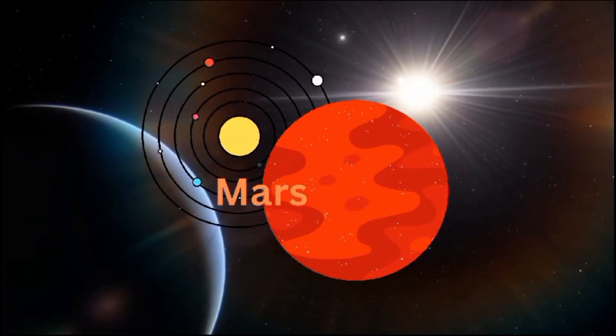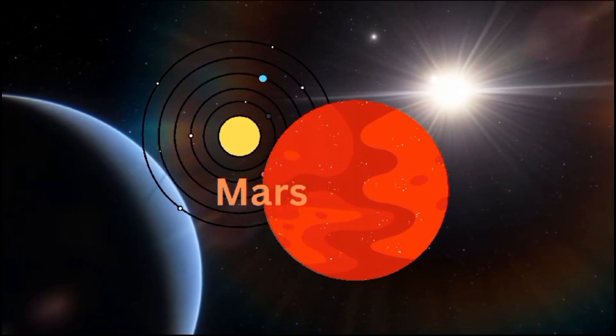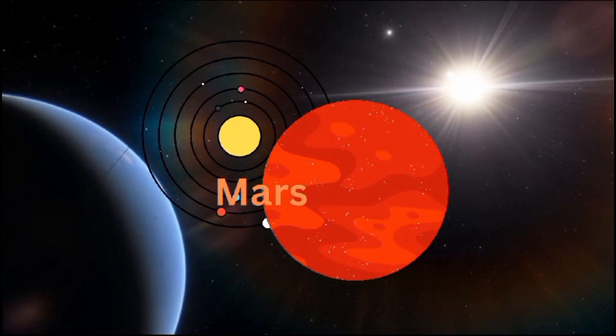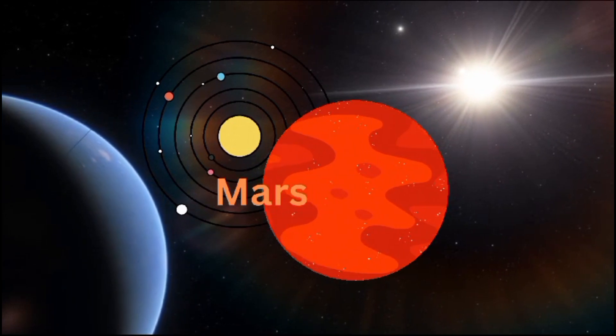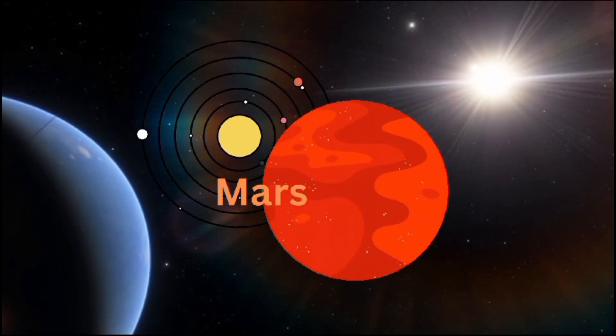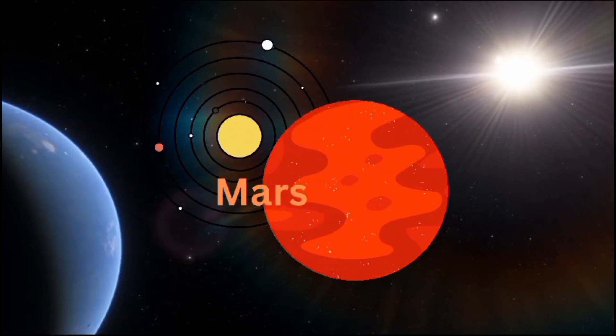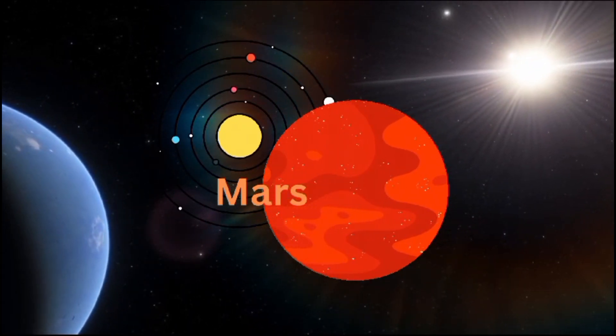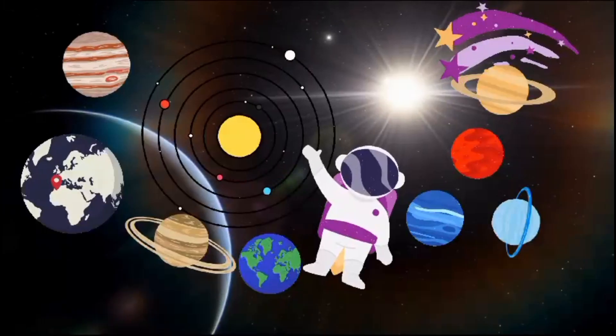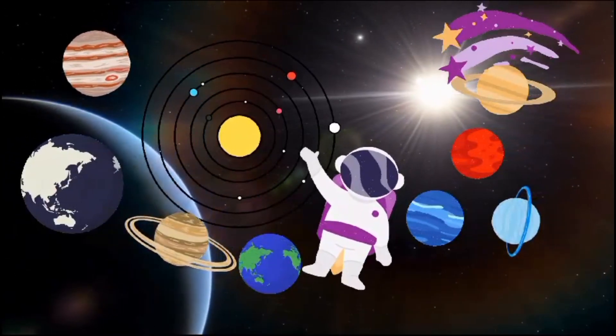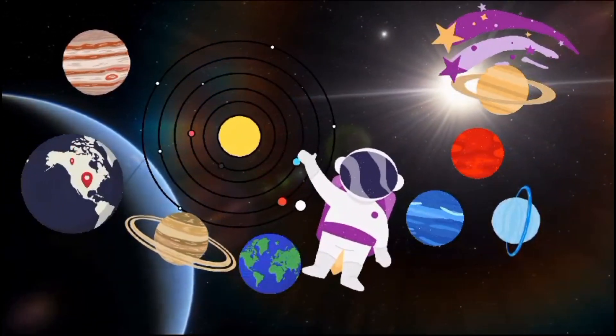My name is Mars. I am red in color, the fourth planet from the Sun. I have the highest mountain in our solar system, a volcano named Olympus Mons.